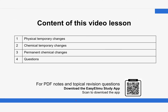In our lesson today, we are going to work on the physical temporary changes first, and then we are also going to discuss the chemical temporary changes, and then we are going to look at the permanent chemical changes. We are going to look at the properties of each of these changes with examples, and then later we are going to do some questions in regards to what we discuss.